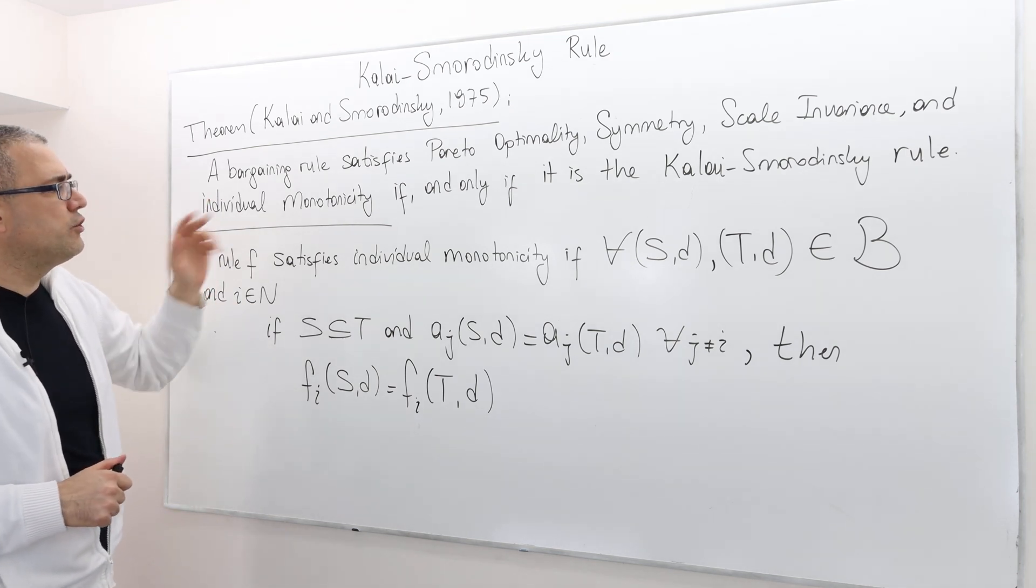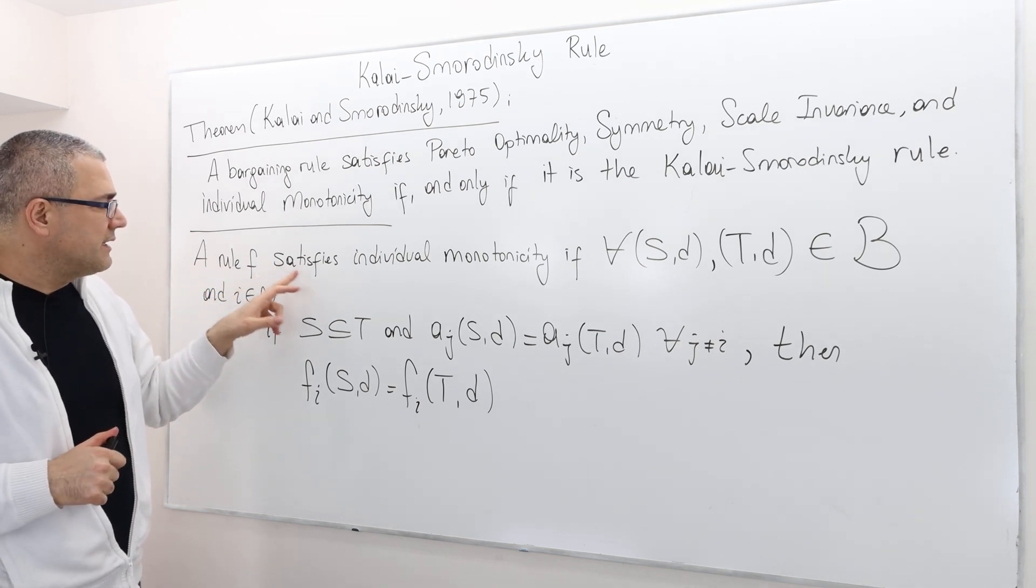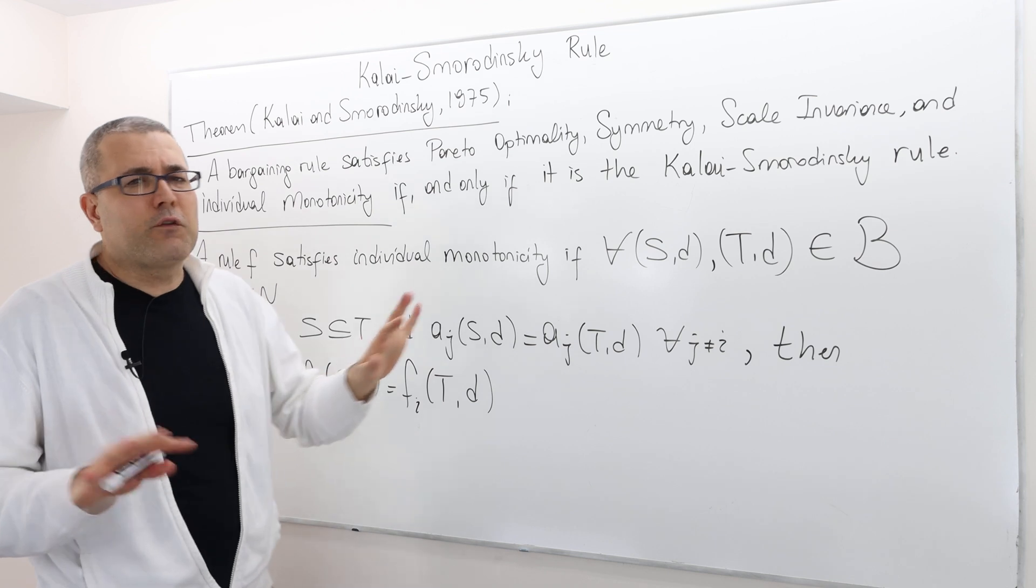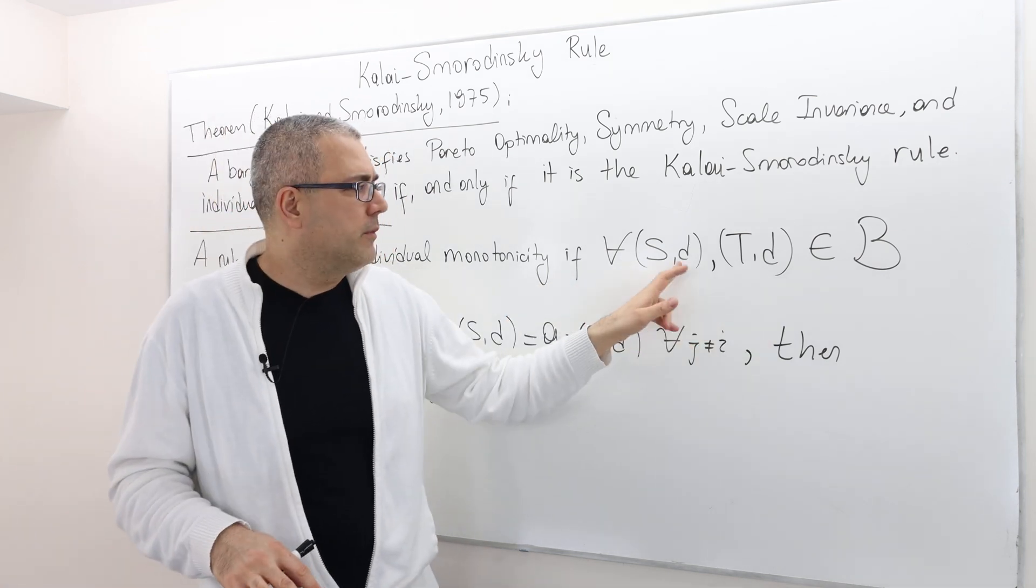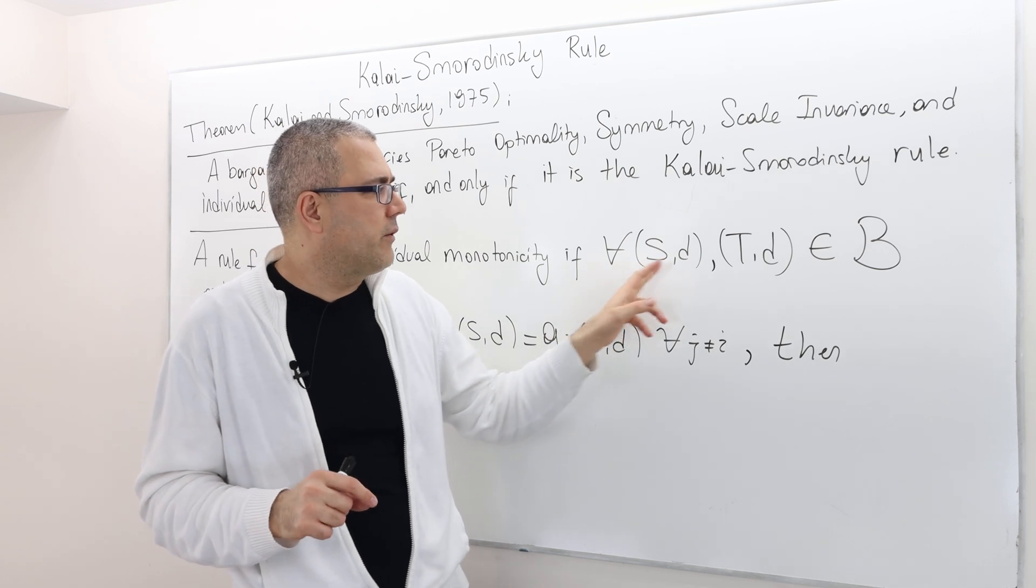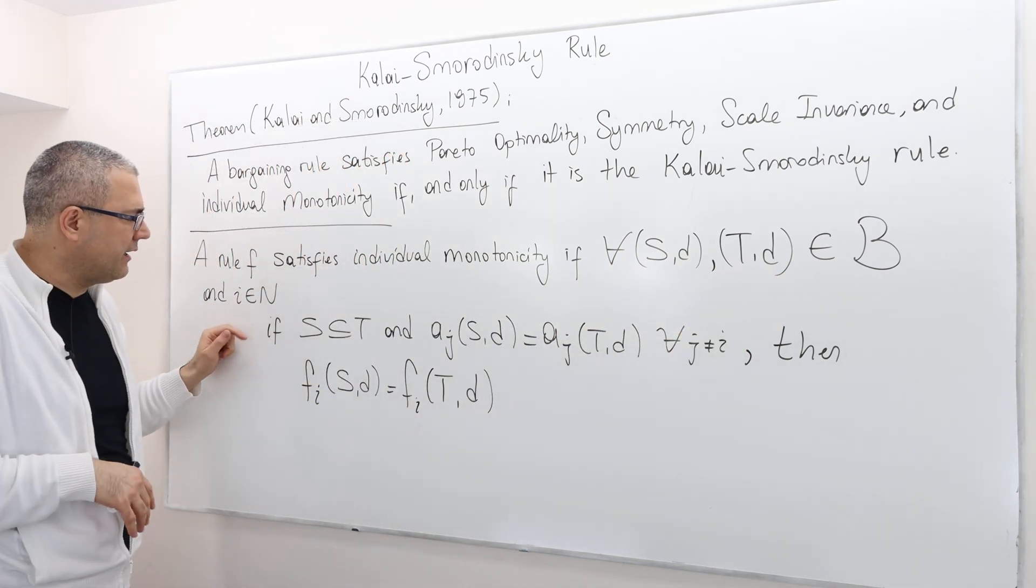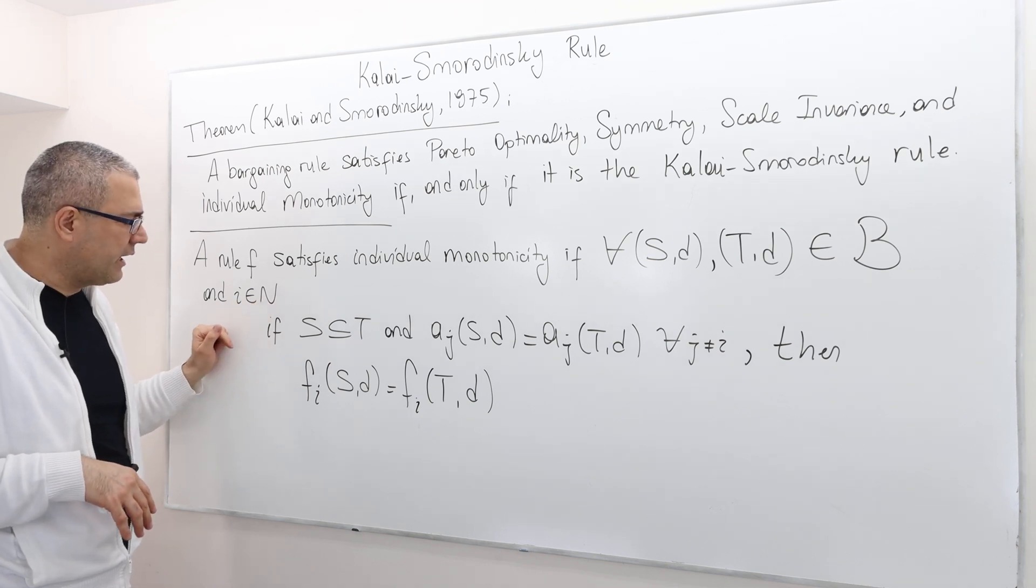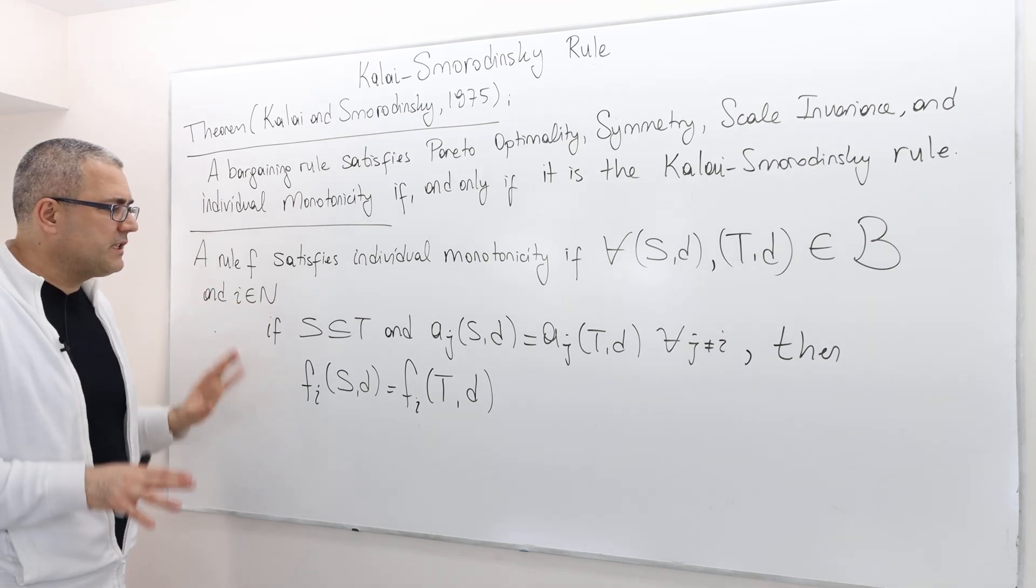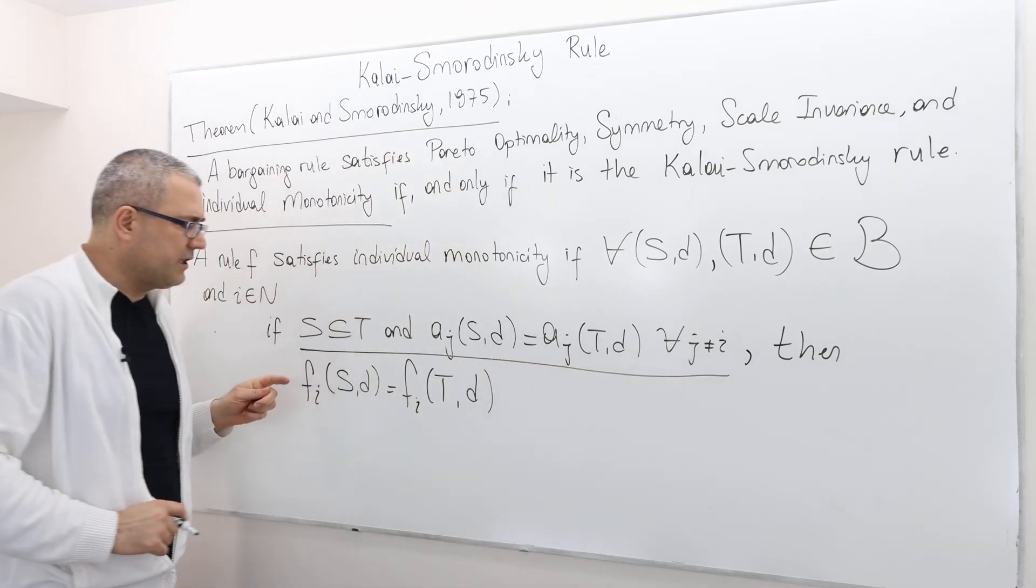So how do we define individual monotonicity? A rule, a bargaining rule F, satisfies individual monotonicity if for any two bargaining problem with the same disagreement point. So S,D and T,D. And for any individual in my set of negotiators. So I have an if-then statement. If this part is true, what is this part?